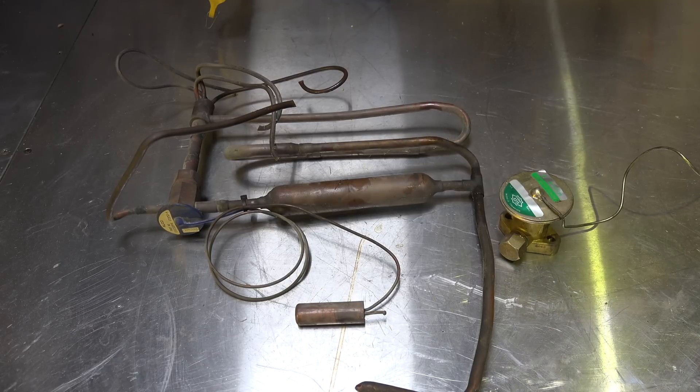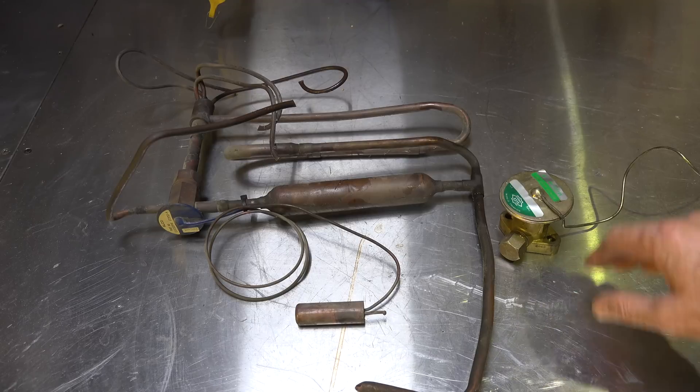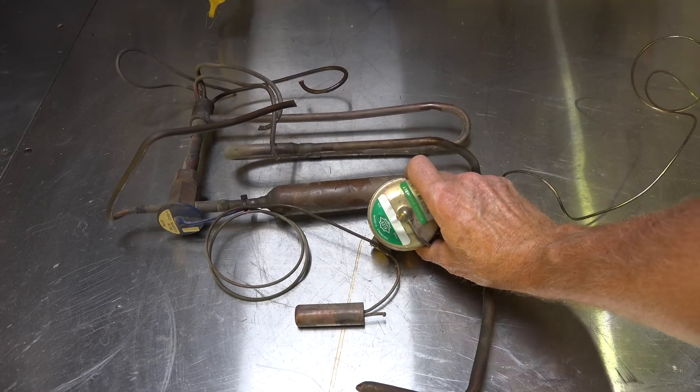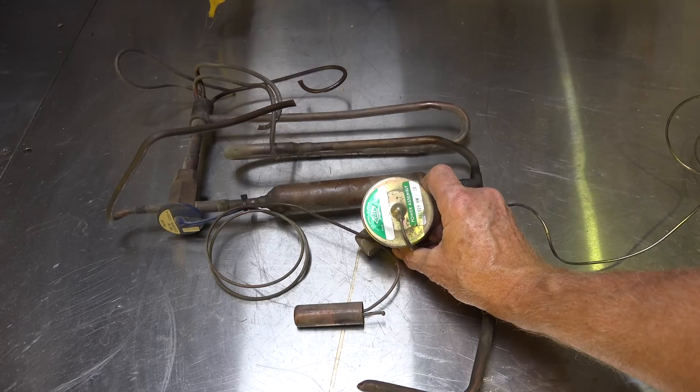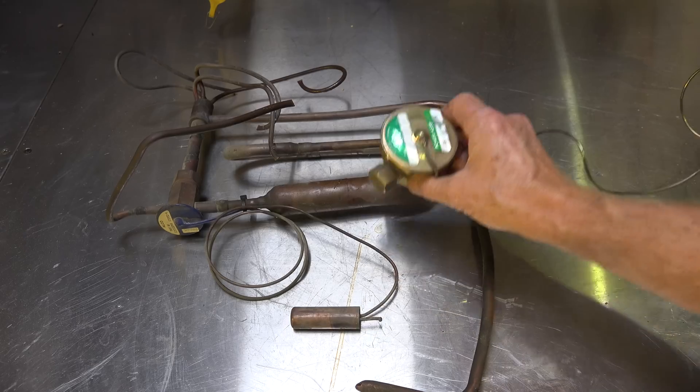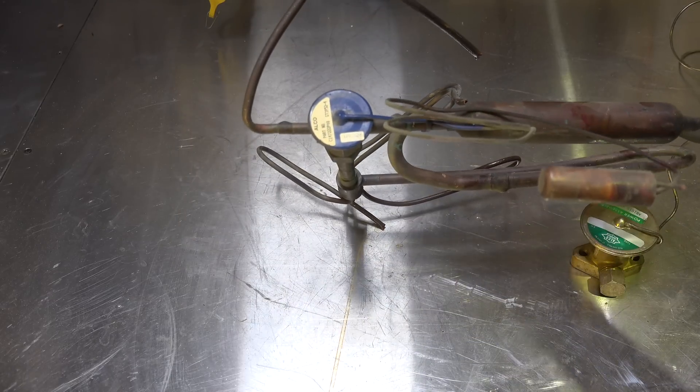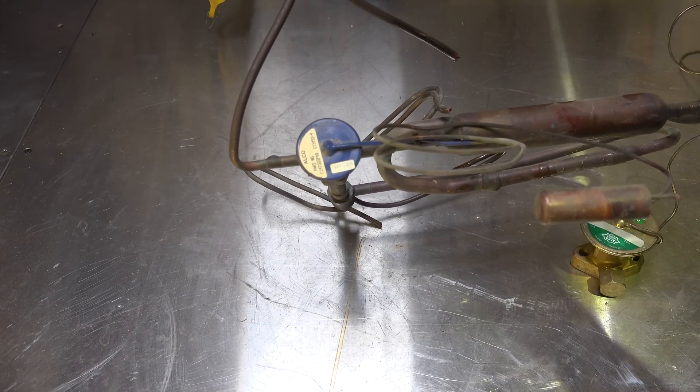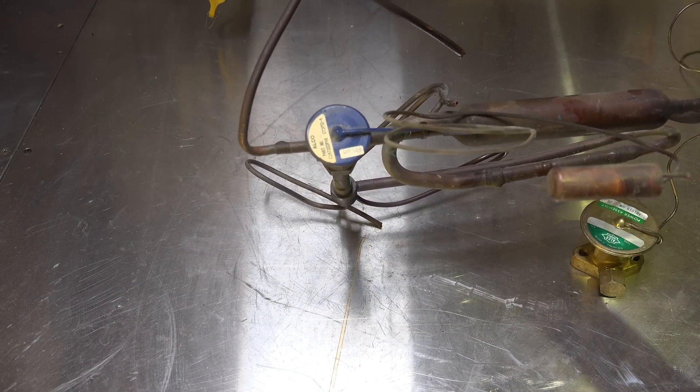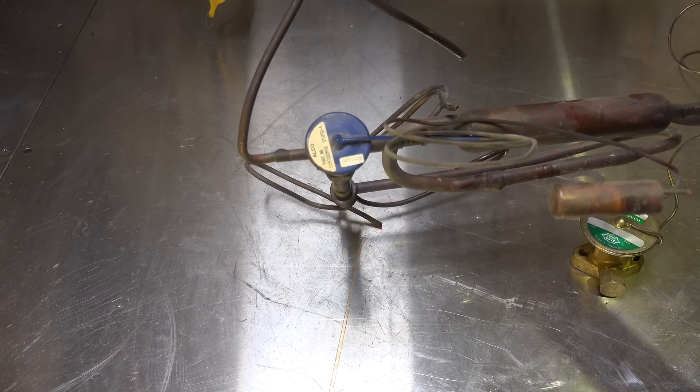I wanted to do a little comparison video. I've got two valves here. This one here is an Alco valve, and it's 3.7 ton. This is just the power head. This one here is an OEM, also an Alco valve. It's a Trane OEM, and it is 3 ton.